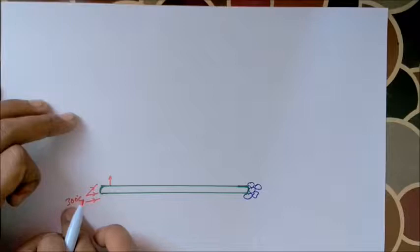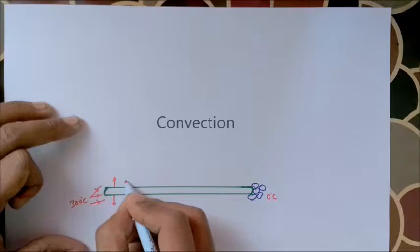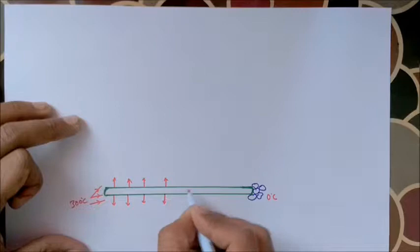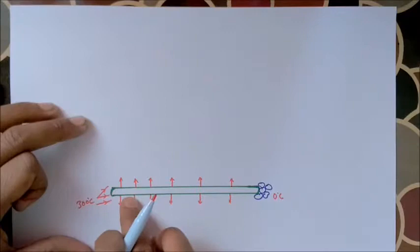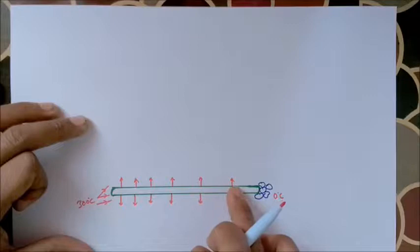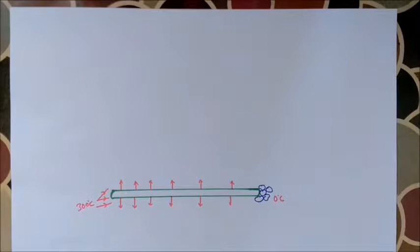The heat is 300 degrees centigrade on one end and 0 degrees centigrade on the other, with convective heat loss. The temperature is high, and this is the reason that the rate of heat loss is less than the rate of heat loss at the other end.